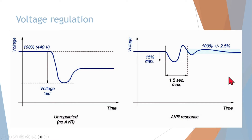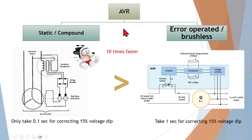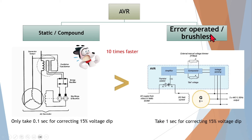To meet this requirement we need a device called an automatic voltage regulator. There are two kinds of AVR: static, and compound/error-operated or brushless. Static AVRs are much faster than the error-operated type — we can say 10 times faster. It only takes 0.1 seconds for correcting a 15 percent voltage deviation, whereas the error-operated type takes one second for correcting 15 percent voltage, which is still within the classification requirements. In this first session we will be discussing the error-operated type; the static one we will discuss later.